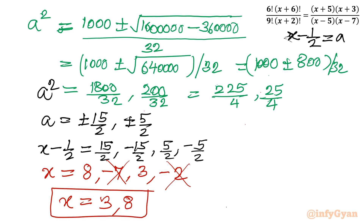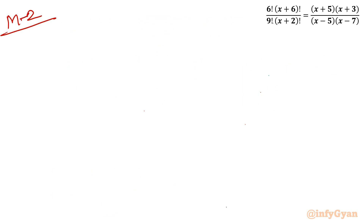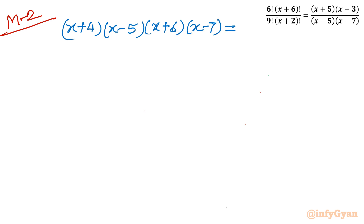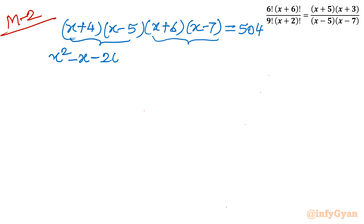Now for method number 2, which is very simple. I rewrite our quartic equation by pairing brackets differently: (x+4)(x−5) times (x+6)(x−7) = 504. Taking the products: (x² − x − 20)(x² − x − 42) = 504.